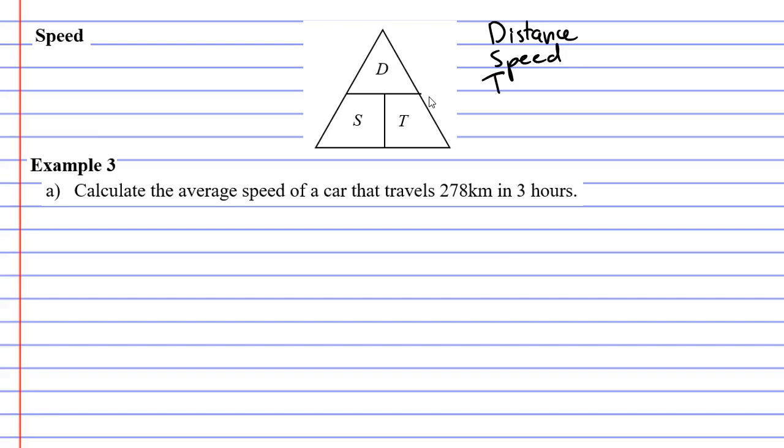and T stands for time. And the way it works is, if I wanted to find speed, I look at my triangle and notice that distance is above time. So we go distance over time, like so.